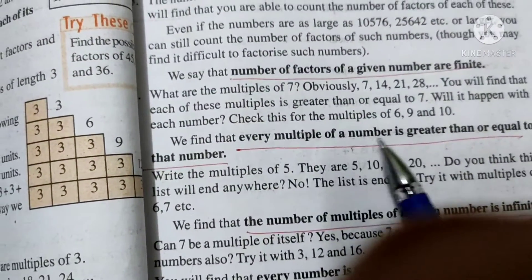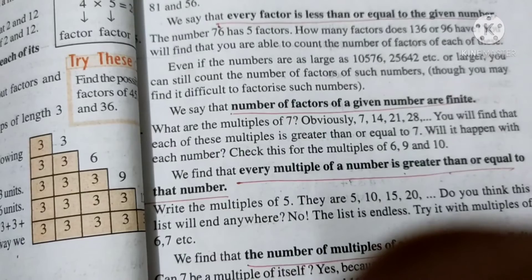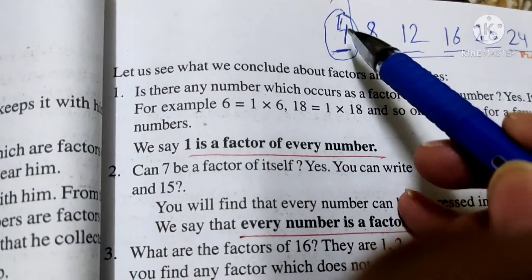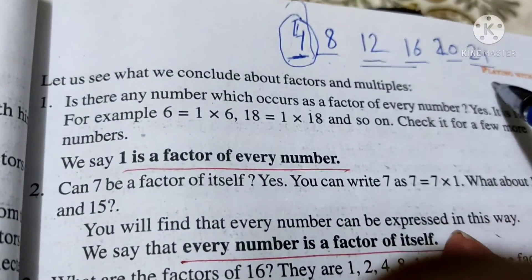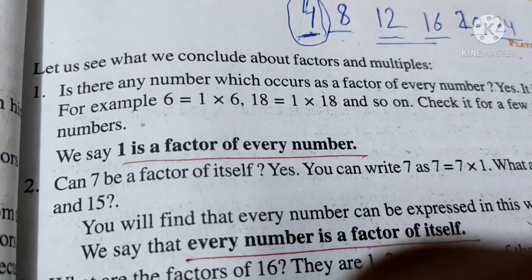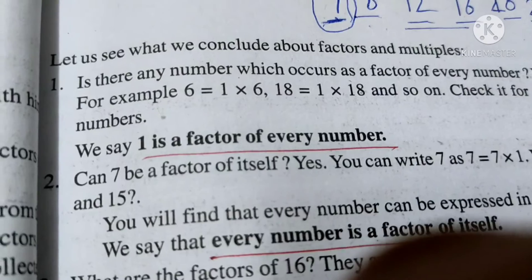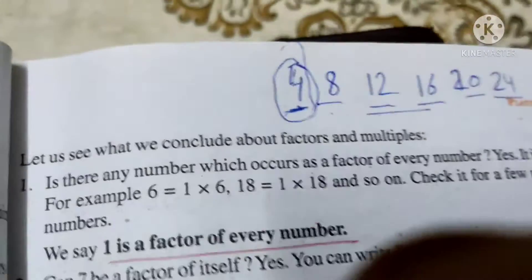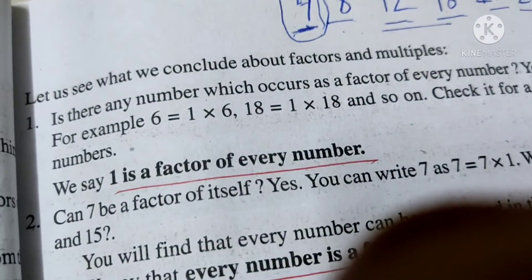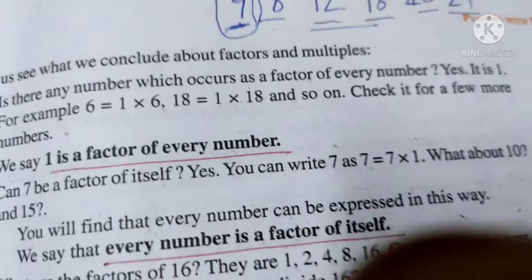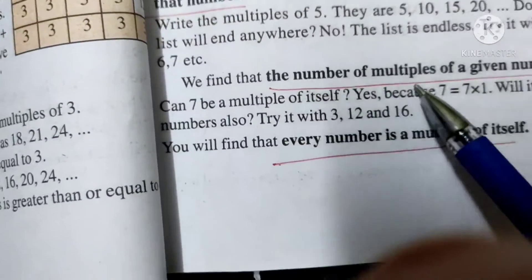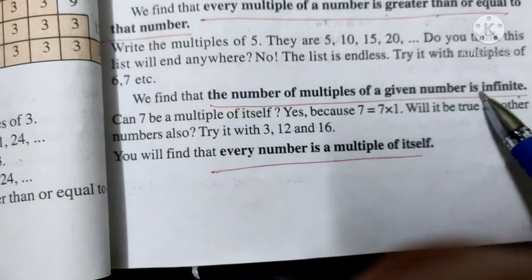So every multiple of a number is greater than or equal to that number. You can see, from which number we have started writing the multiples? 4 itself. And others are greater than 4. So while writing the multiples, we should keep in mind that they are either greater than or equal to that given number. And as this can go on, we can write as many as we want. So this is infinite in number, which cannot be counted. So multiples cannot be counted. The number of multiples of a given number is infinite.